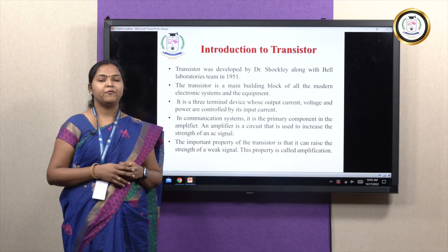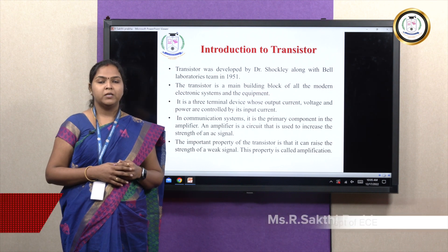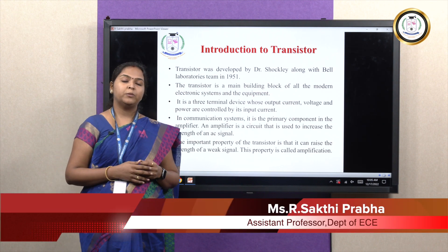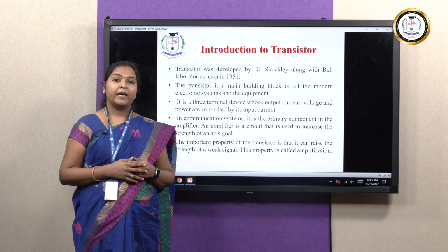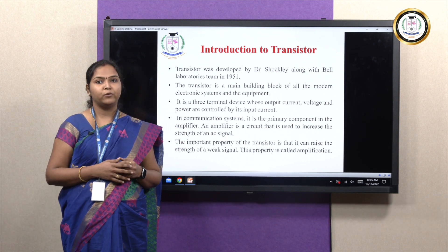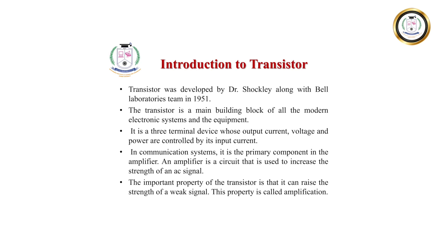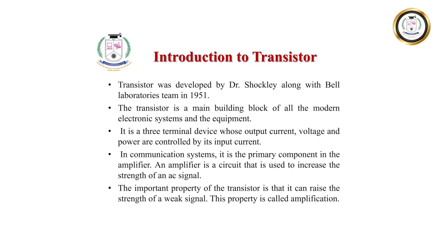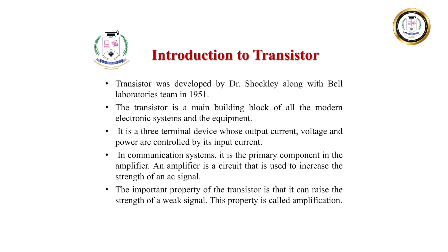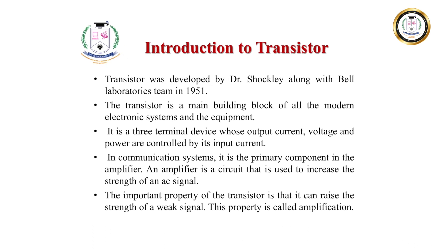An amplifier is nothing but a transistor which helps to increase the strength of a weak signal. For example, if I need to address a huge crowd in an auditorium, I may not be audible to persons sitting at the last row. In such a case, I have to make use of a microphone as well as a speaker. My voice signal, which is very weak, can be amplified so that it can be audible to persons at the last row. This property is said to be amplification.